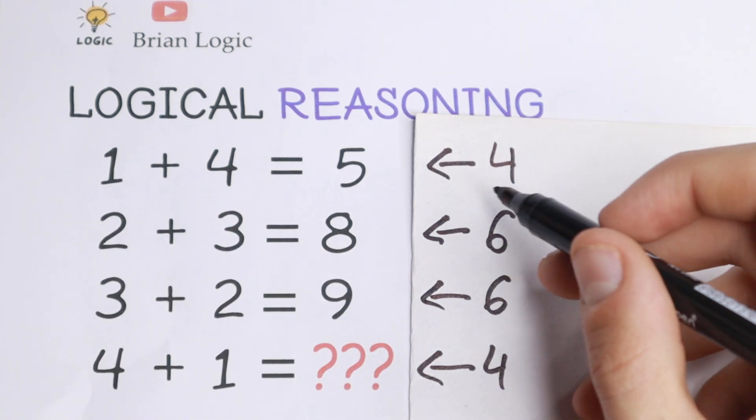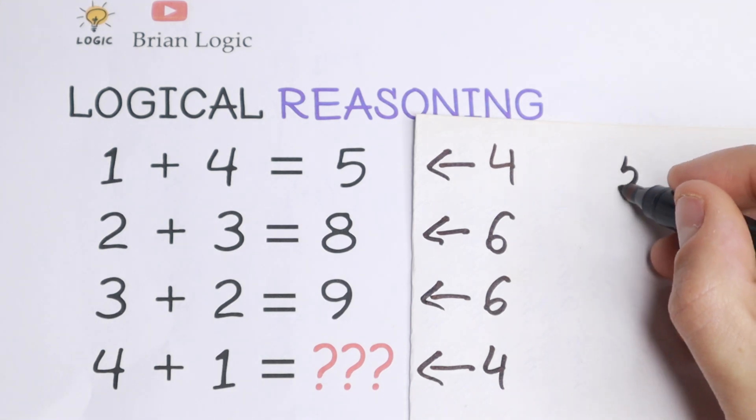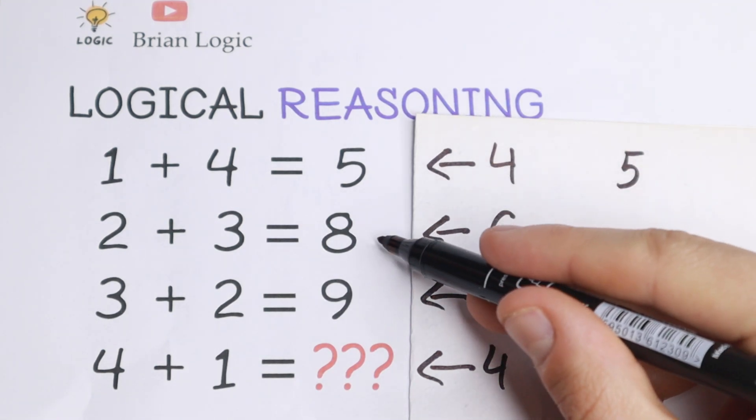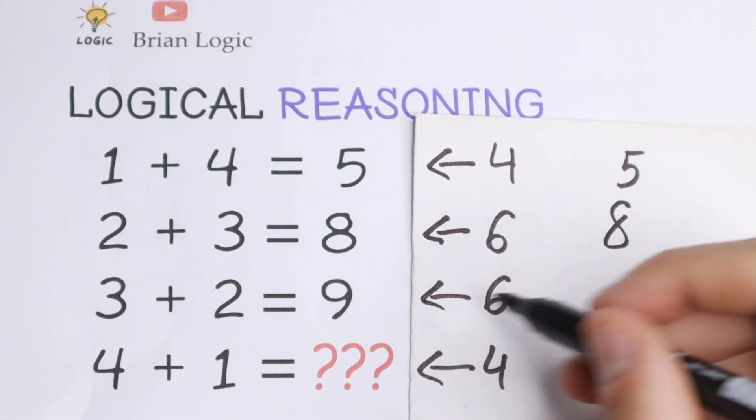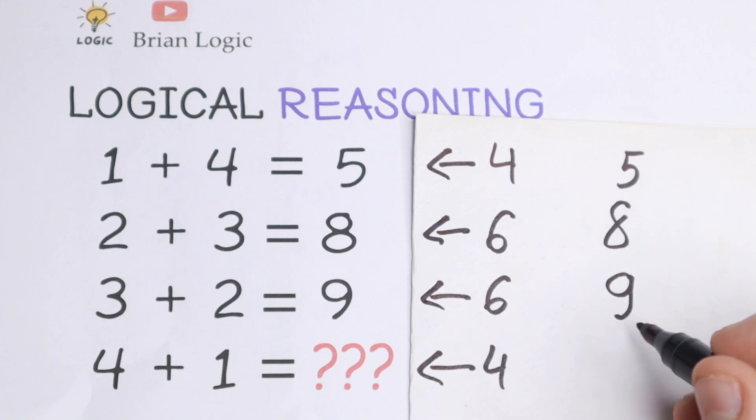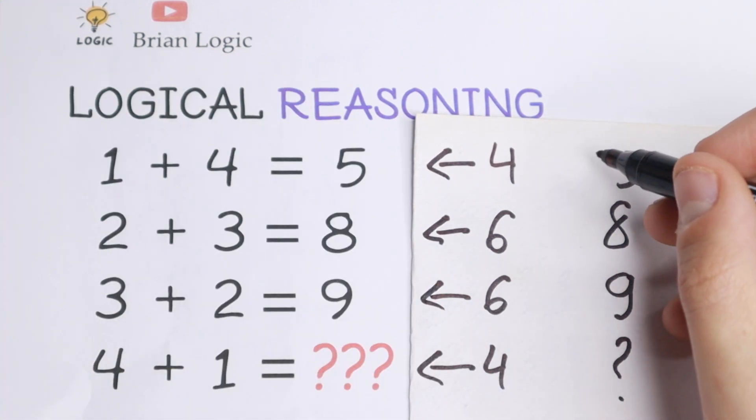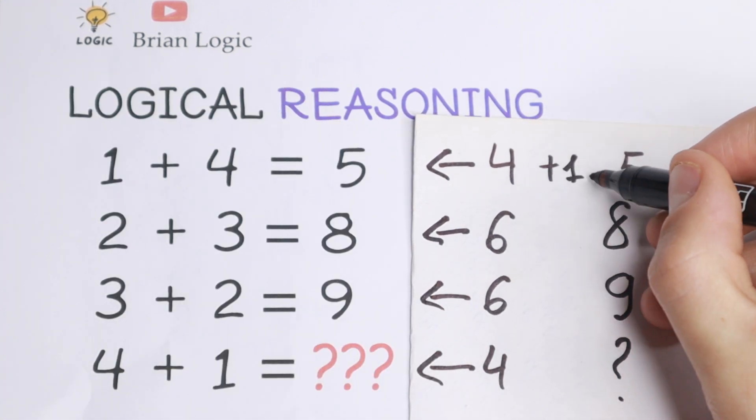Take a look, right here we have 5, I write this number right here, we have 5. Right here we have 8, right here we have 9 and we need to find the last one. What we need to do with this 4 to get 5? Of course we need to add 1 to these numbers.